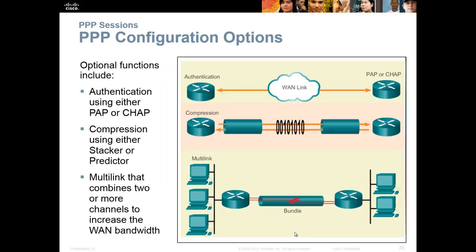The big thing with PPP is it supports authentication through PAP or CHAP, and it allows compression. You can compress your data using Stacker or Predictor. We typically don't compress data because it's an extra step — your router compresses it, sends it, and the other router uncompresses it, adding overhead. If you've got a low-speed link and you're trying to get more data across it, maybe compression is your answer. But nine times out of ten, we're not using that.